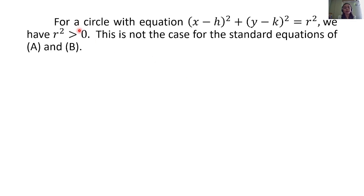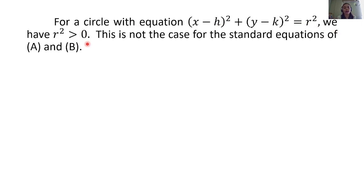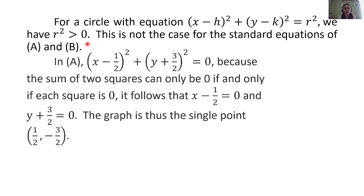For a circle with equation: the quantity of x minus h squared plus the quantity of y minus k squared equals r squared, we need r squared greater than zero. That is not the case for the standard equations of examples A and B. The condition is that r squared should be greater than zero, but that wasn't satisfied in those two examples.